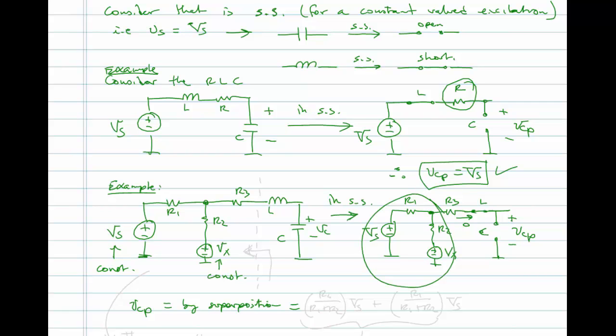And so when I look at this part here, I see just a summing of two voltages and it's weighted. I can write this by inspection. So I have Vs times R2 over R1 plus R2, and I have Vx which is R1 over R1 plus R2. And that's it.